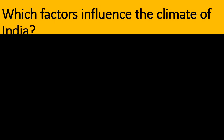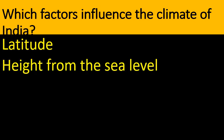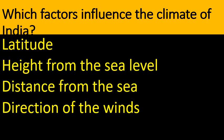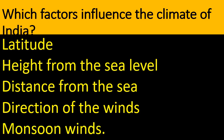Which factors influence the climate of India? Latitude, height from sea level, distance from the sea, direction of the winds and monsoon winds influence the climate of India. Water bodies can also be written as a factor.